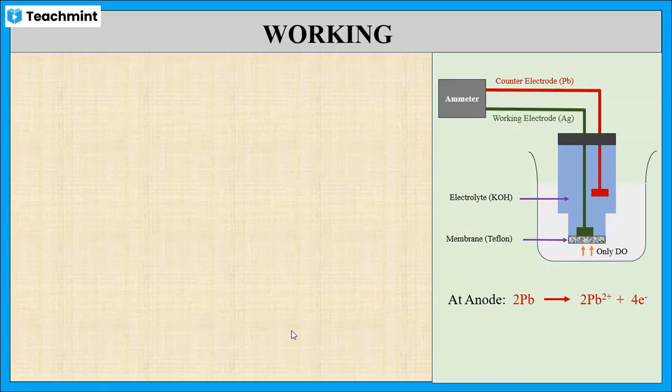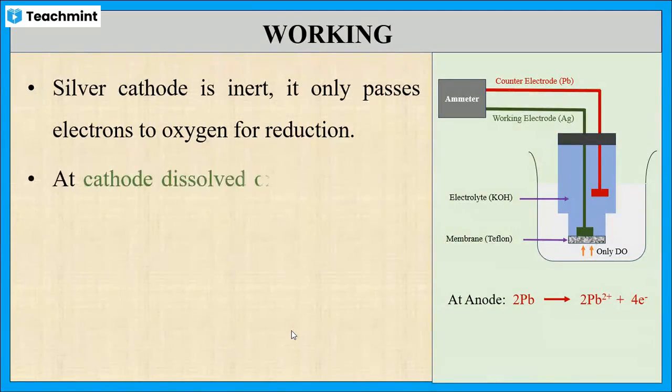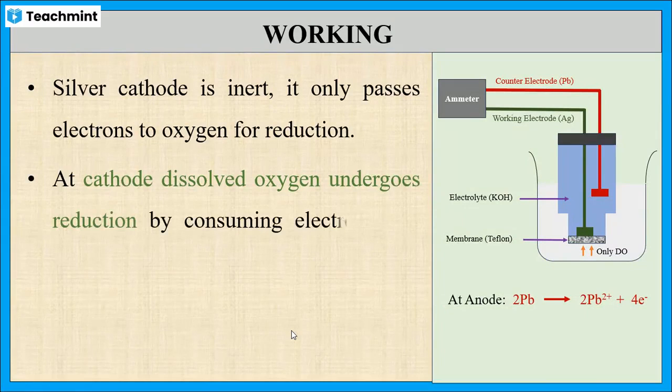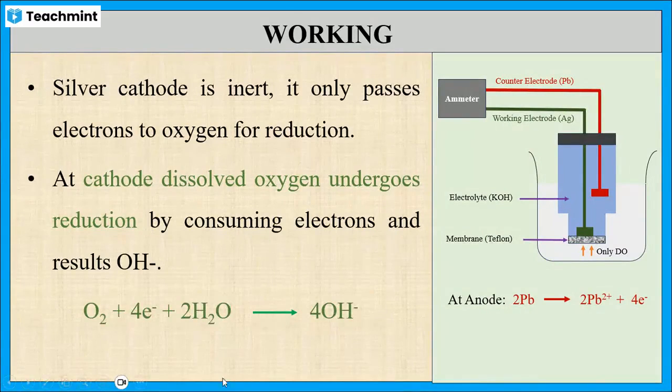The silver used in the cathode is not undergoing any reduction. Instead, it passes the electrons to the oxygen. Hence, at cathode, dissolved oxygen undergoes reduction to form hydroxide ions. So this is the reaction that takes place at cathode.